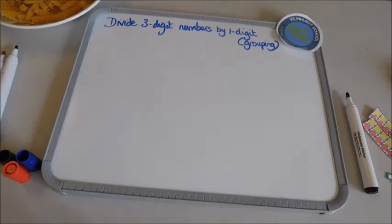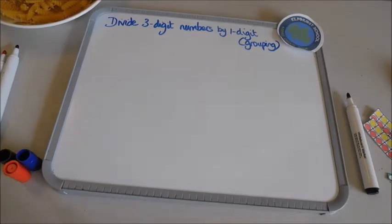I'm going to show you how to divide three-digit numbers by one digit using grouping. Children can continue to use grouping to support their understanding of short division when dividing a three-digit number by a one-digit number. Place value counters or plain counters can be used on a place value grid to support this understanding, and children can, just like me, draw their own counters and group them through a more pictorial method.